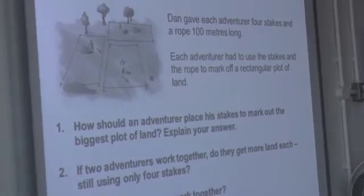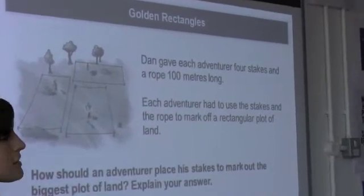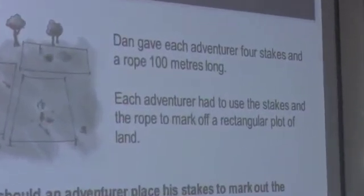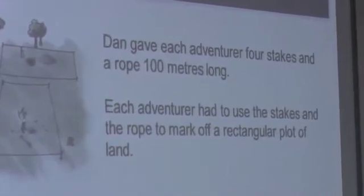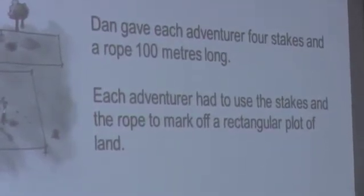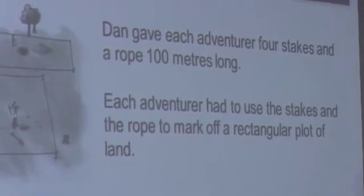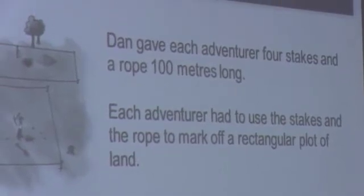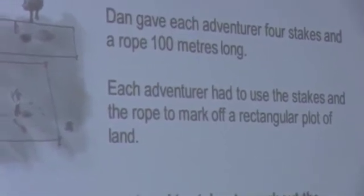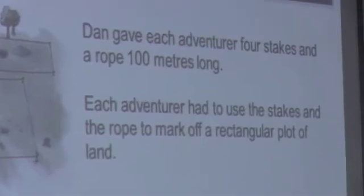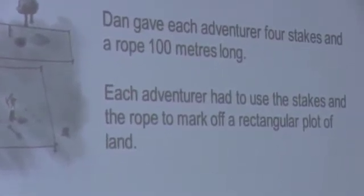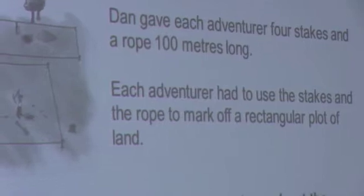What he did is he gave each adventurer four stakes — that's like a wooden sort of peg that you can put in the ground — and a rope that is 100 metres long. So a piece of rope and four stakes. And each adventurer had to use the stakes and the rope to mark off a rectangular plot of land, and that's where they can dig in.